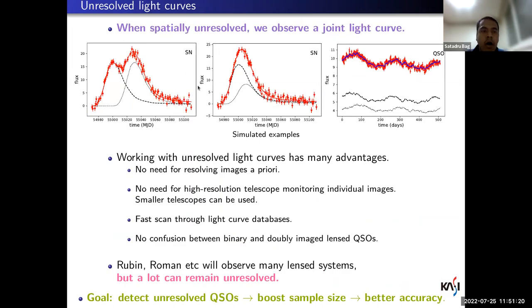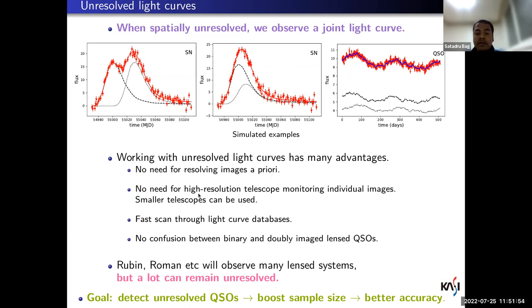When sources are spatially unresolved, we will not see the individual image light curves; rather we see the sum of them — the joint light curve. There are examples for supernovae and for a quasar. The goal is to detect these unresolved lens systems using the light curve data. Advantages include: no need to resolve images a priori, no need for expensive high-resolution monitoring of individual image light curves, and we can scan through light curve databases to search for lensed objects.